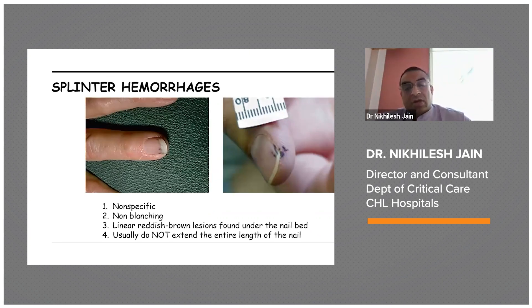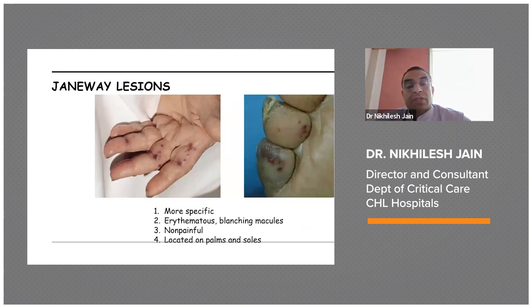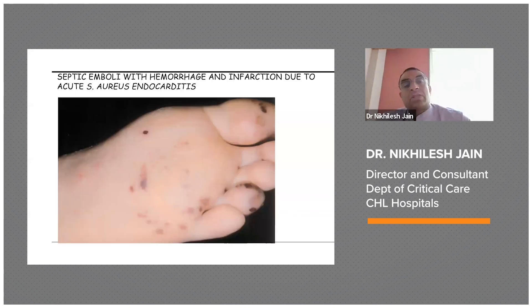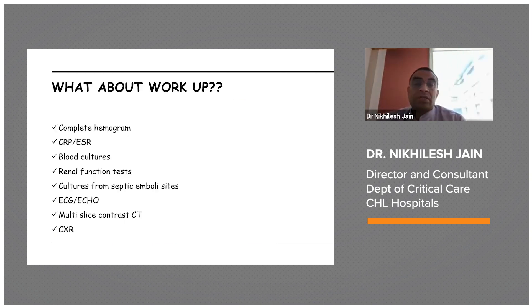Splinter hemorrhages are non-specific, non-blanching reddish-brown lesions found under the nail bed that usually do not extend the entire length of the nail. Osler nodes are more specific for infective endocarditis — painful erythematous nodules located on the pulp of the fingers and toes, more commonly associated with subacute infective endocarditis. Janeway lesions are erythematous blanching macules that are non-painful, located on palms and soles. Roth spots are retinal hemorrhages seen in severe anemia as well. Investigations include a complete hemogram, CRP, and ESR.